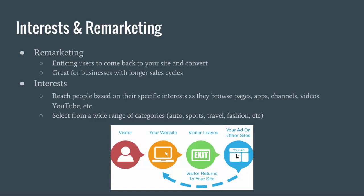The second one in this category is interest targeting, which is actually very similar to topics. It reaches users based on their specific interests as they browse pages, apps, channels, videos, YouTube, and so on — targeting users based on things they do or like. The selection is also very similar, where you get to choose from a wide range of categories like auto, sports, travel, fashion, etc.